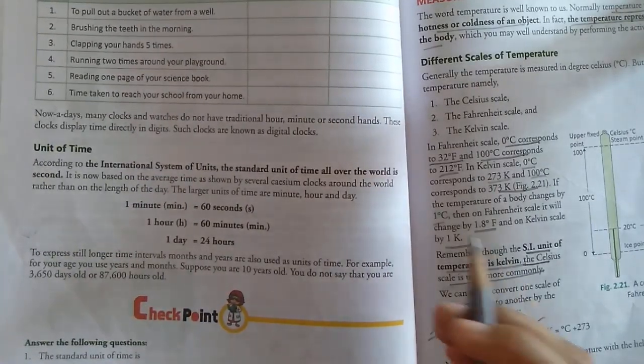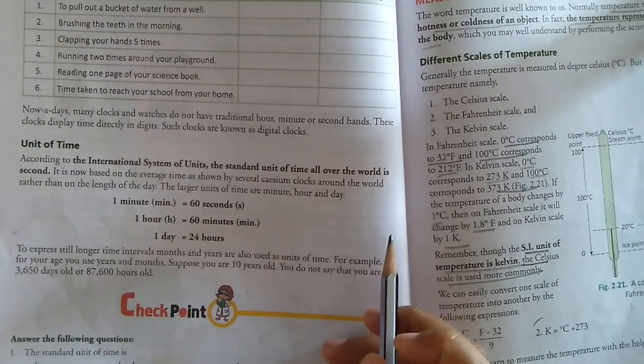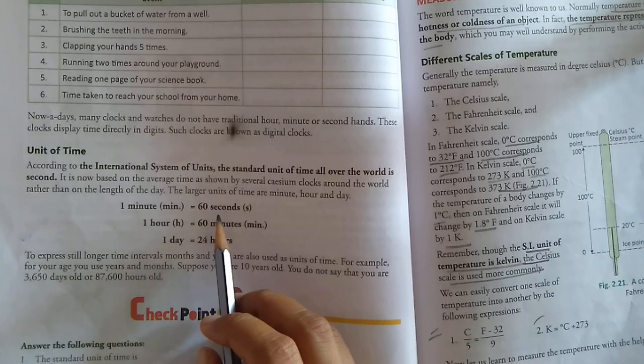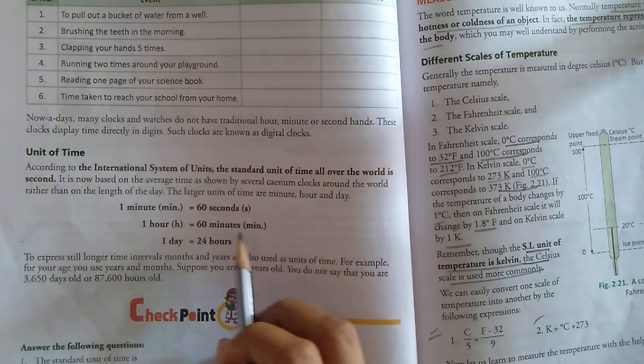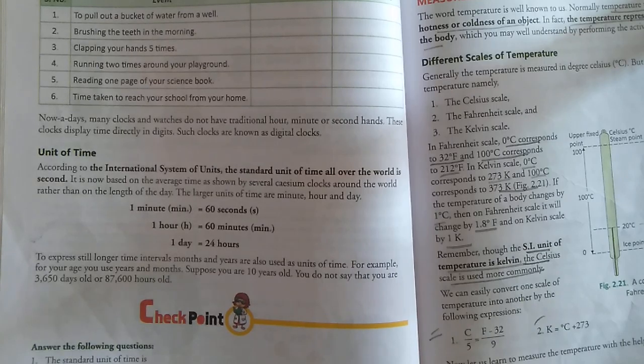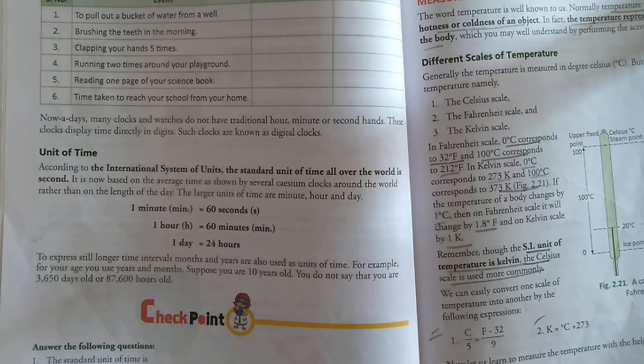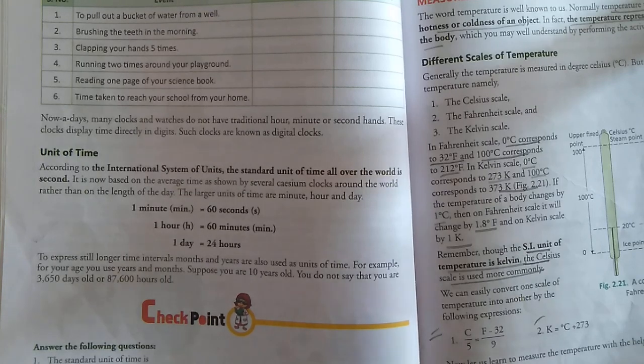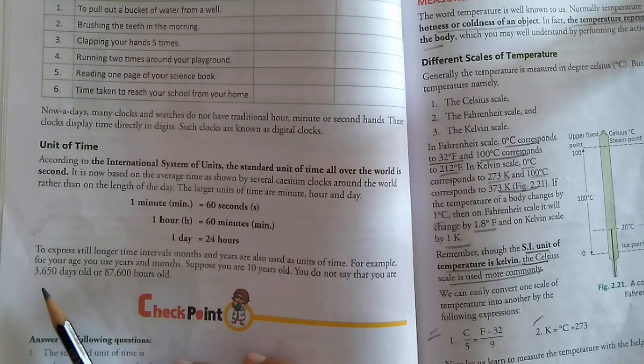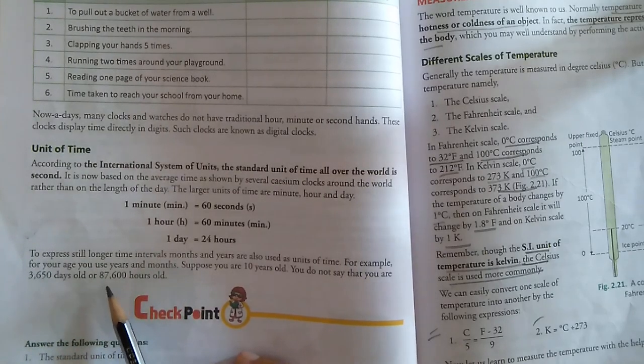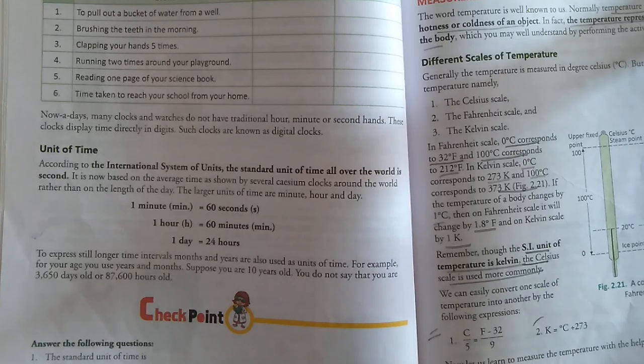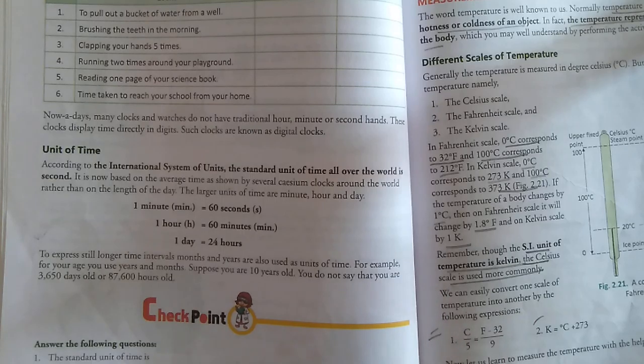Unit of time. According to the international system of units, the standard unit of time all over the world is second. One minute equals 60 seconds. One hour equals 60 minutes and one day equals 24 hours. To express still longer time intervals, months and years are also used as units of time. For example, suppose you are 10 years old. You do not say that you are 3650 days old or 87,600 hours old.